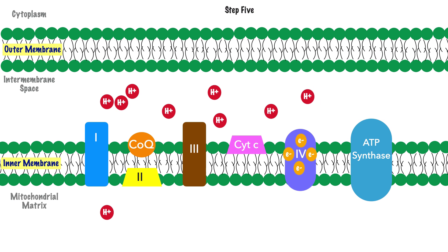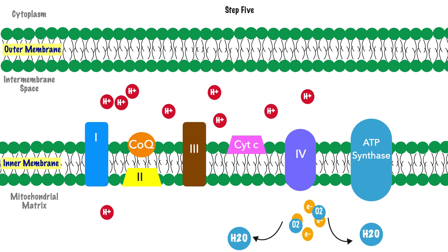For step 5, with electrons gathered at Complex 4, we reach the end of the electron transport chain. The last act is when our electrons reach the final electron receptor, which is oxygen, found within the mitochondrial matrix. Through a subsequent reaction, two water molecules are formed.